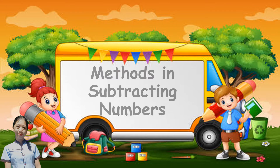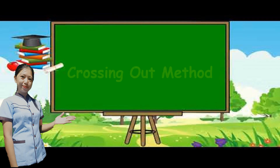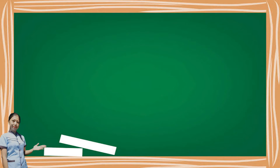And there are methods in subtracting numbers. The first one is the crossing out method. Let us learn how the crossing out method is done.